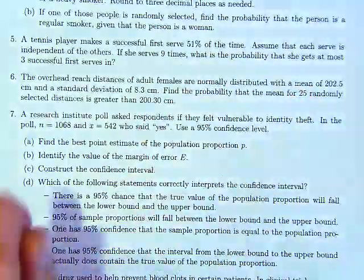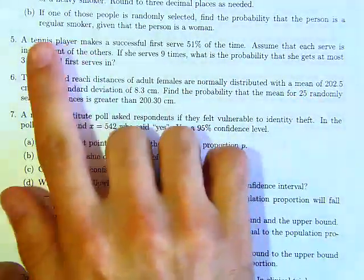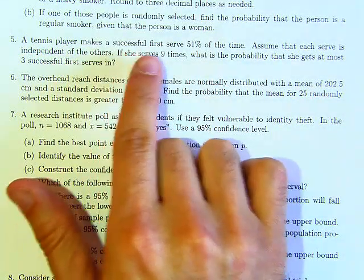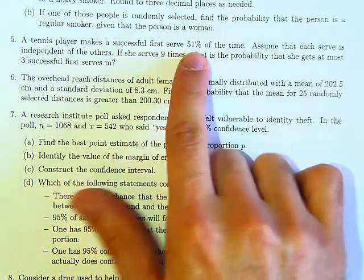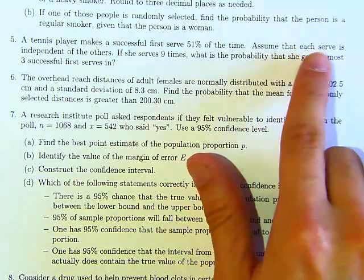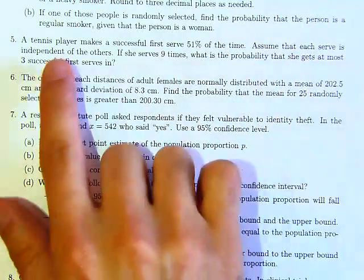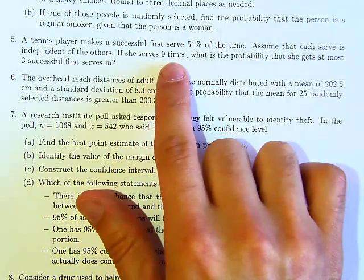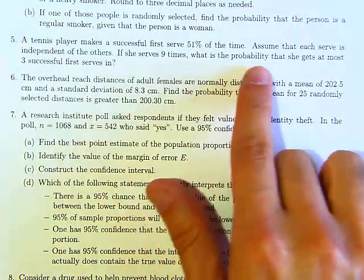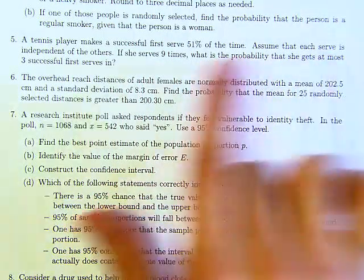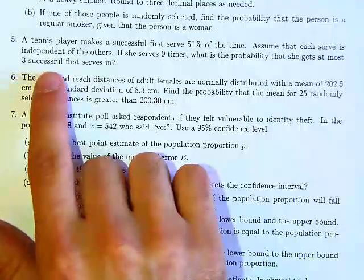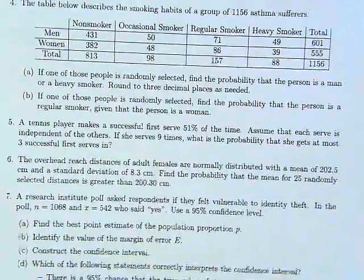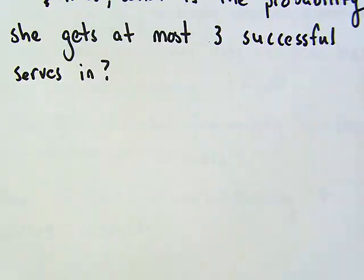Welcome back. Let's go over question five. It says a tennis player makes a successful first serve 51% of the time. Assume that each serve is independent of the others. If she serves nine times, what is the probability that she gets at most three successful first serves?